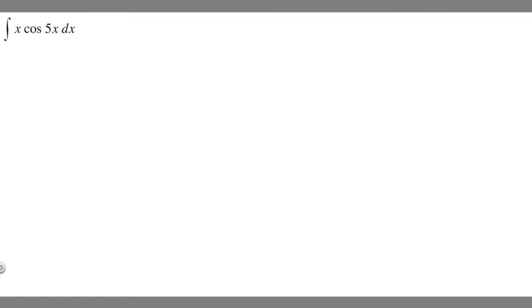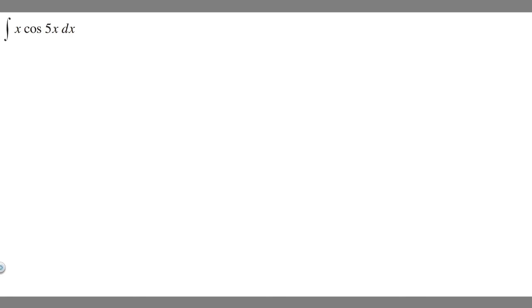In this problem, we're going to find the integral of x times the cosine of 5x dx. So in this problem, we're going to be using integration by parts. And so when you use integration by parts, you have to decide what's going to be u and what's going to be dv.